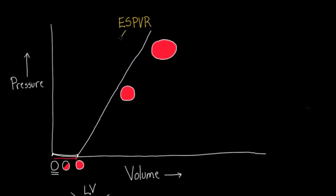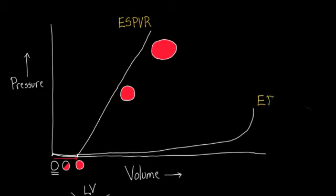I've drawn out the end-systolic pressure-volume relationship. What I want to do now is add the end-diastolic pressure-volume relationship, which goes something like that. Let me label it in yellow just to be parallel — so this is our end-diastolic pressure-volume relationship. Now, let's just choose a couple of comparison points on both curves.